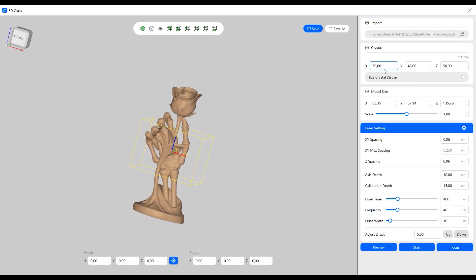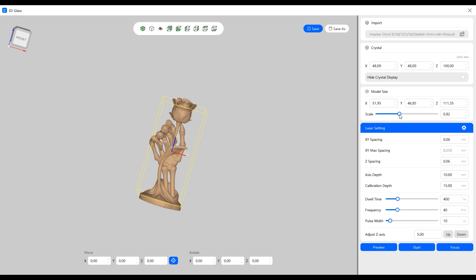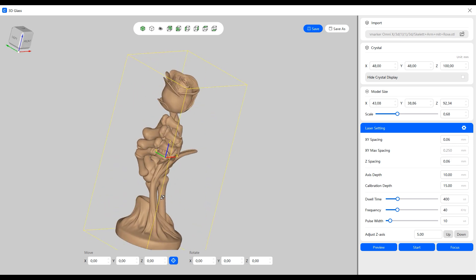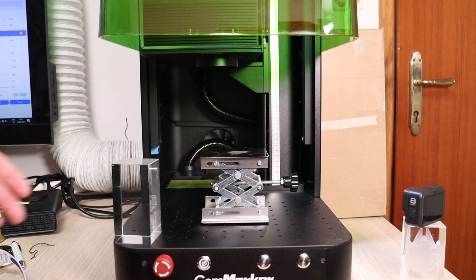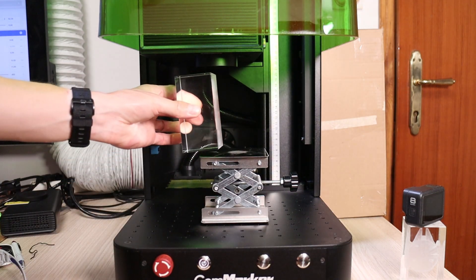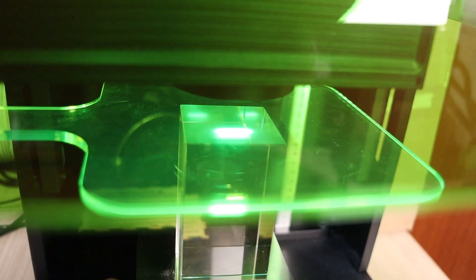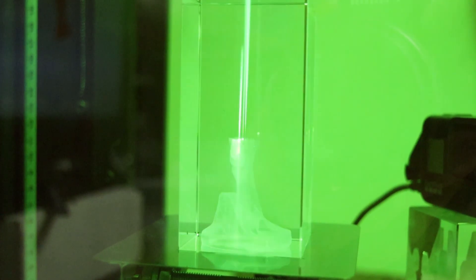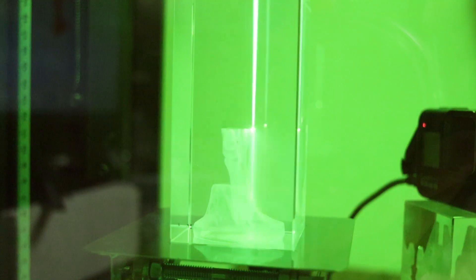And now, it's time for the ultimate test: 3D glass engraving. This is the feature that really sets the CommMarker Omni X apart from the rest of the lineup. Setting it up is surprisingly simple because the software comes with most of the settings preconfigured. All you really need to do is import your 3D STL model, scale it to fit your glass crystal, and you're ready to go. For this process, I left all the other settings at their defaults. To engrave in 3D, you'll need the 70mm lens along with the lifting table to bring the crystal closer to the laser head, and you can use the preview sheet to perfectly align your design. Now, this type of engraving does take some time. Expect anywhere from 20 minutes to an hour for a piece of this size.